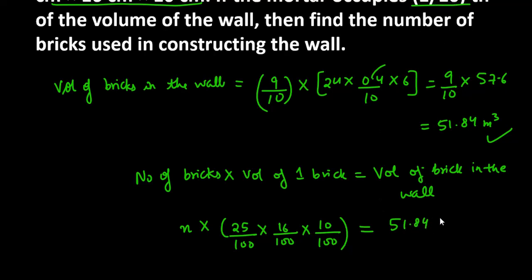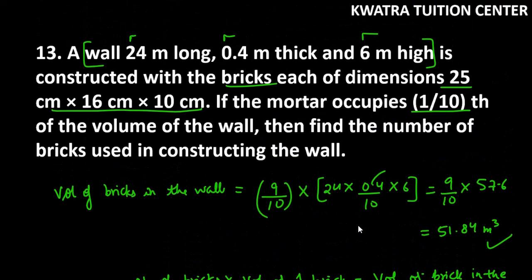You use cross multiplication, which gives 51.84 on the right-hand side, and from the left-hand side you get 0.004. So the final answer is 12,960. That is the number of bricks needed to construct this wall under the given conditions. Now let's move on to question number 14.